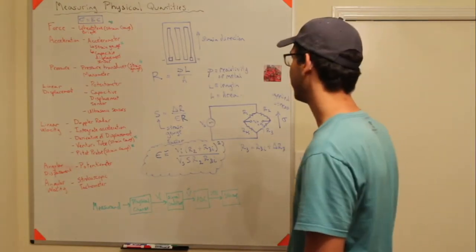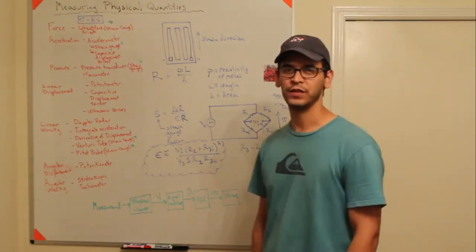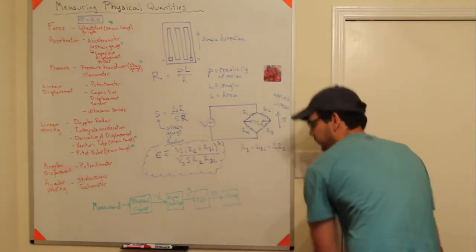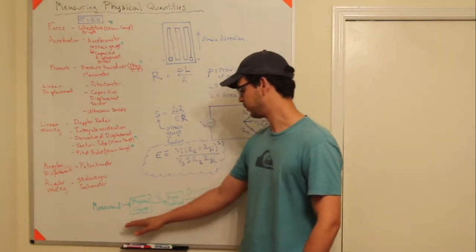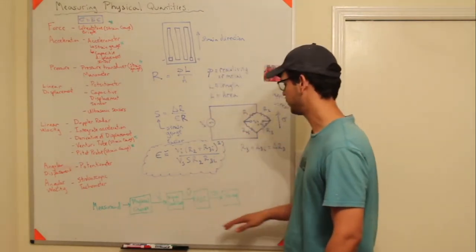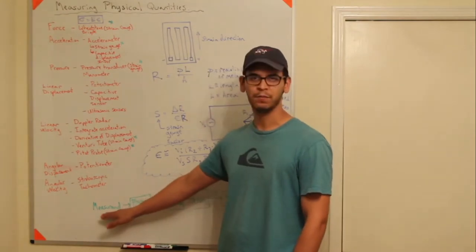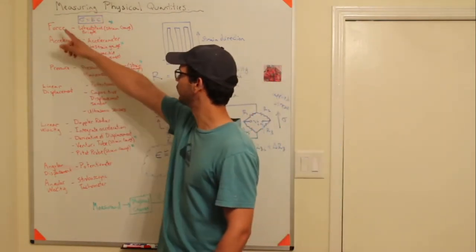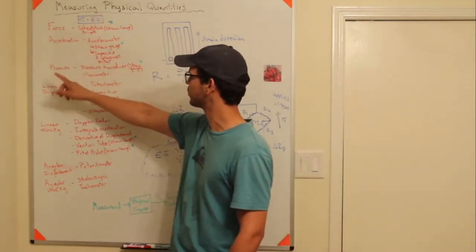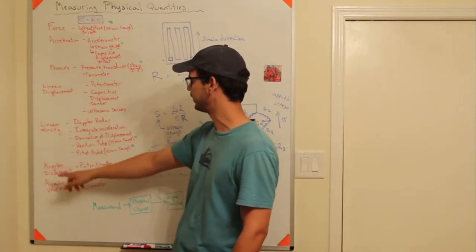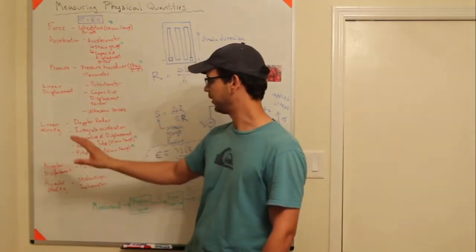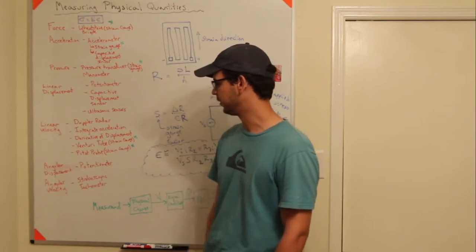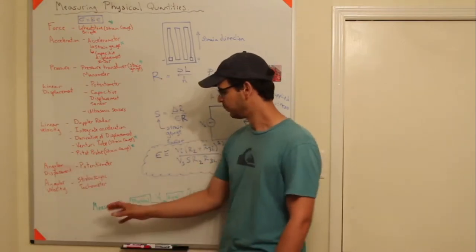This next set of videos is going to be on measuring physical quantities. If you remember the flow in terms of how instrumentation works, you have some measurand — in this case a whole list of them: force, acceleration, pressure, displacement, velocity, and then angular displacement and angular velocity.